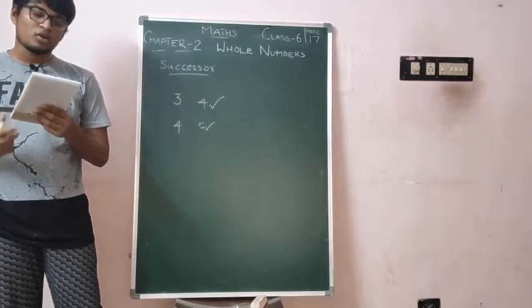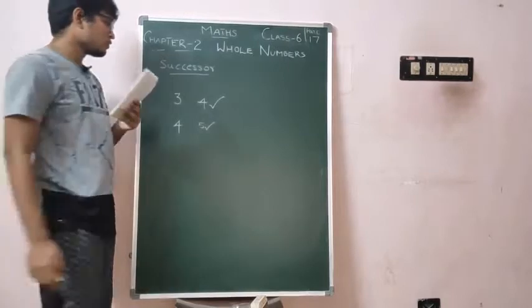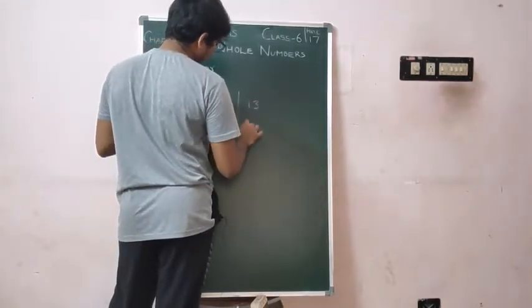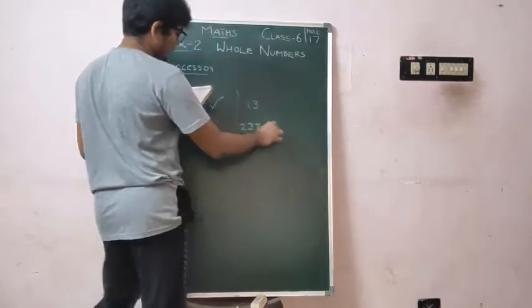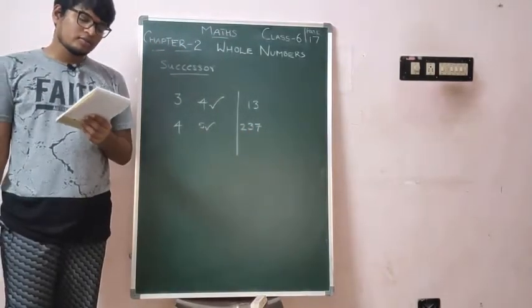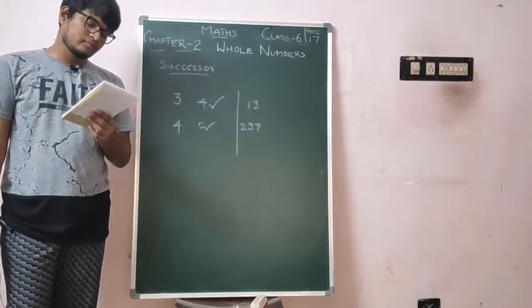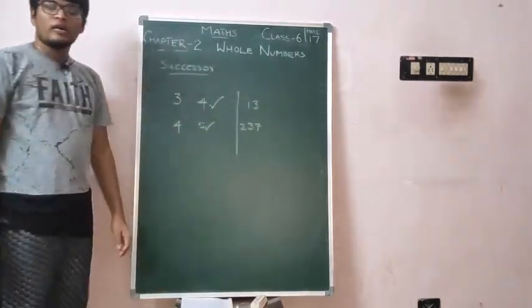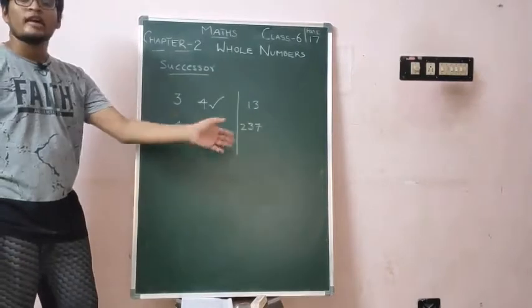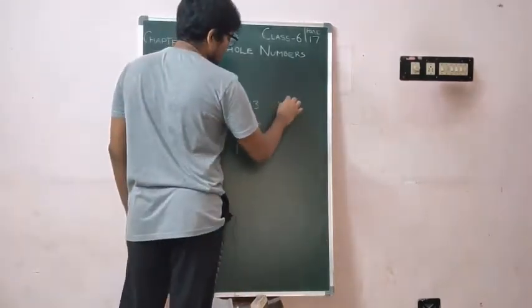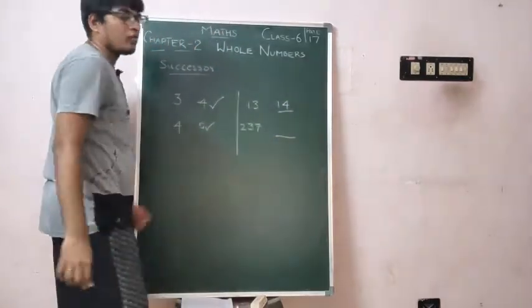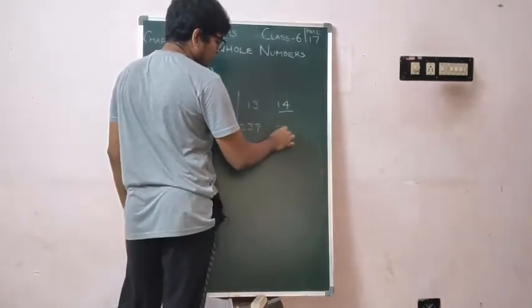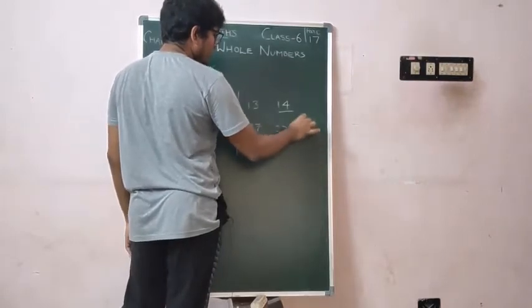Let's take some examples. The successor of 13 and 237. Successor of 13 is 14. And what is the successor of 237? Successor of 237 is 238.